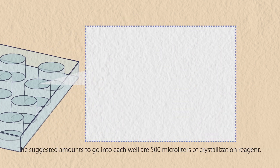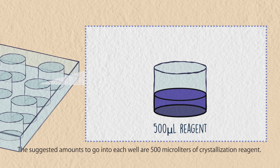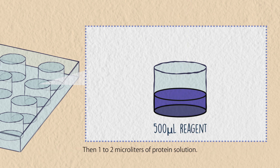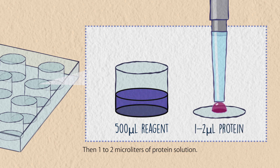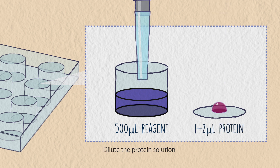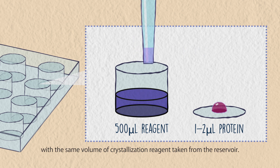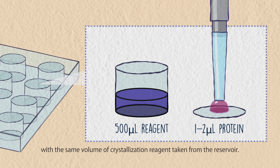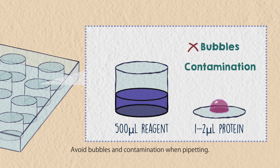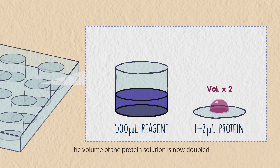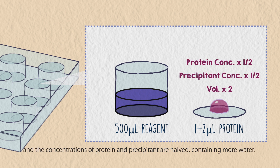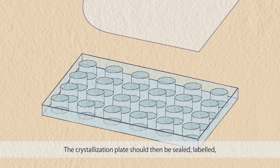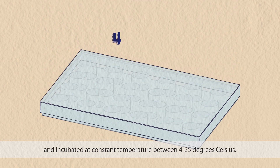The suggested amounts to go into each well are 500 microliters of crystallization reagent, then 1 to 2 microliters of protein solution. Dilute the protein solution with the same volume of crystallization reagent taken from the reservoir. Avoid bubbles and contamination when pipetting. The volume of the protein solution is now doubled and the concentrations of protein and precipitant are halved, containing more water. The crystallization plate should then be sealed, labeled, and incubated at constant temperature between 4 to 25 degrees Celsius.